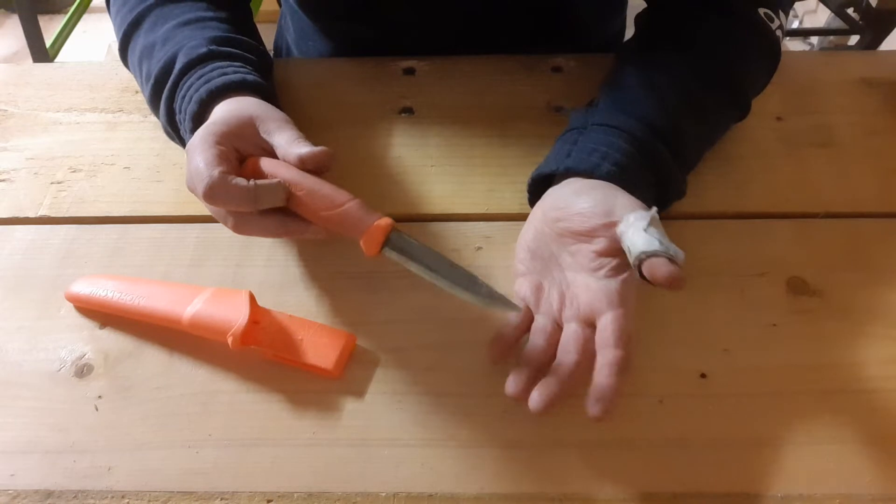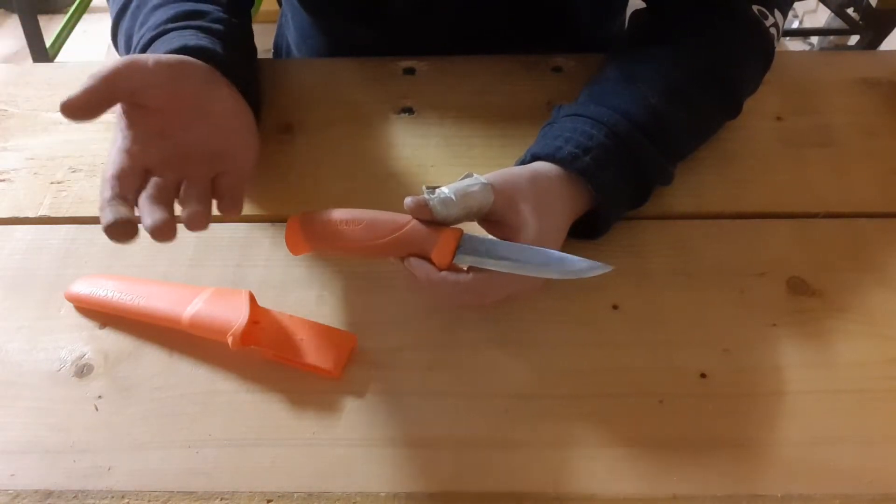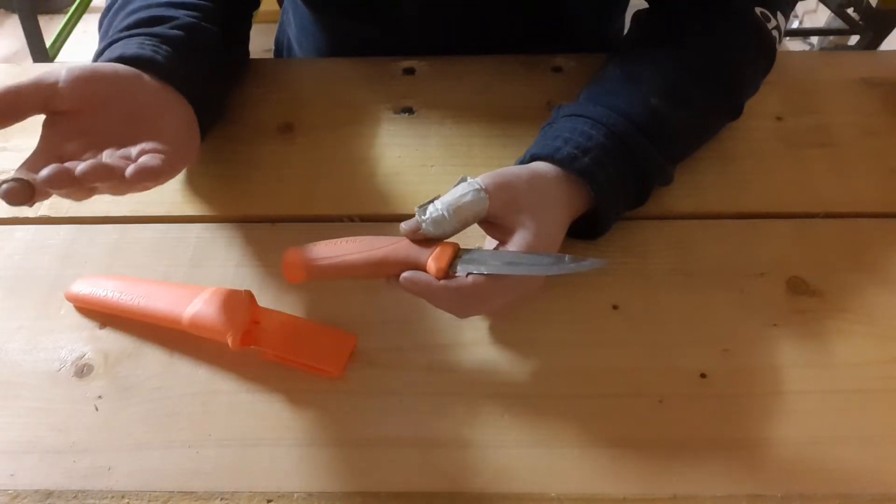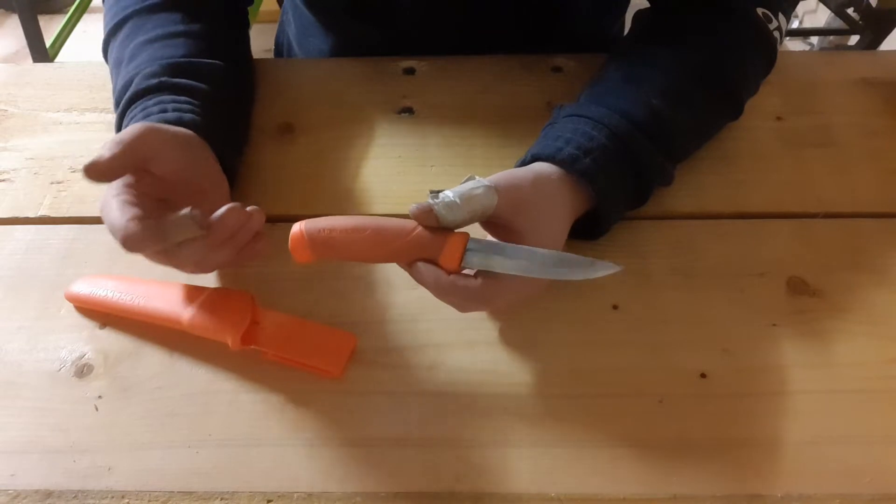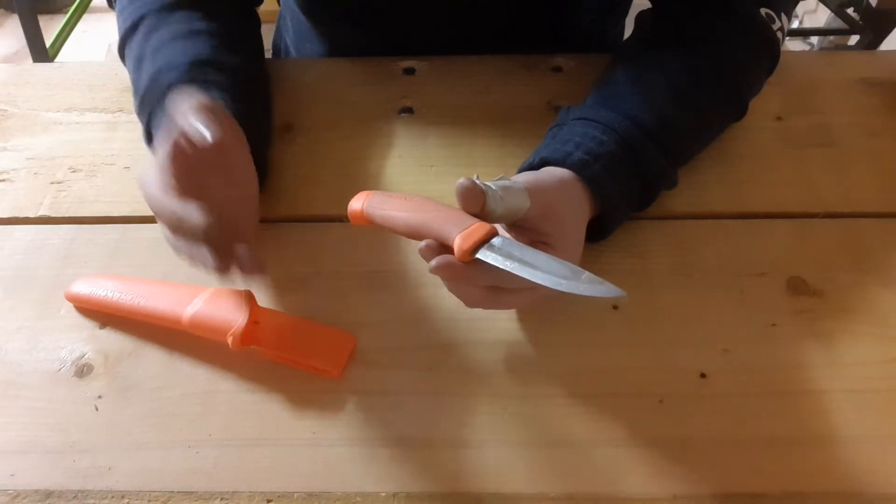Scandi grind is absolutely my favorite because it is the easiest to sharpen, and you can easily get it to a razor sharp edge. It's very simple to do, and it helps the fact that the grind is so large. It's easier to sit on a stone, and it sharpens very easily as well.